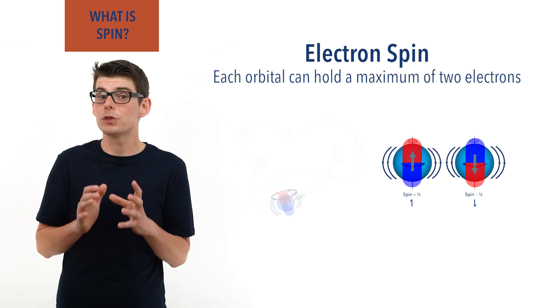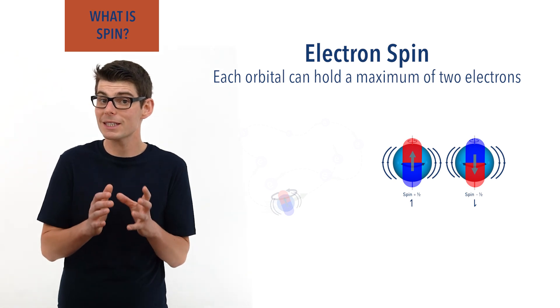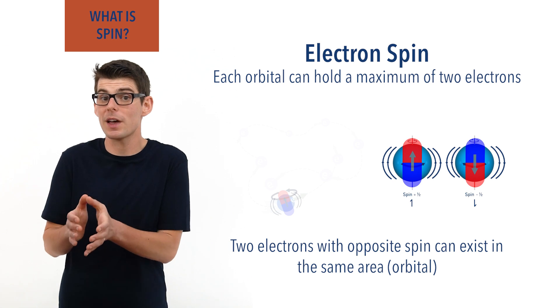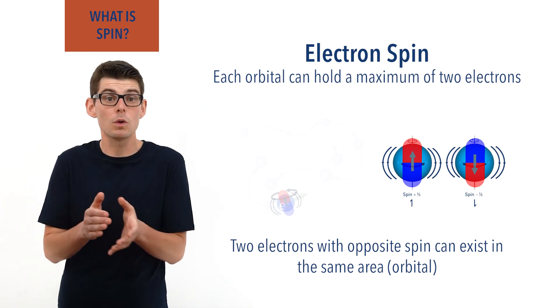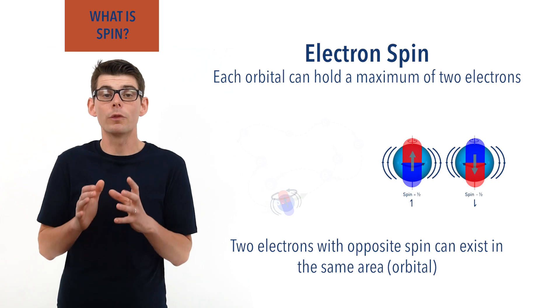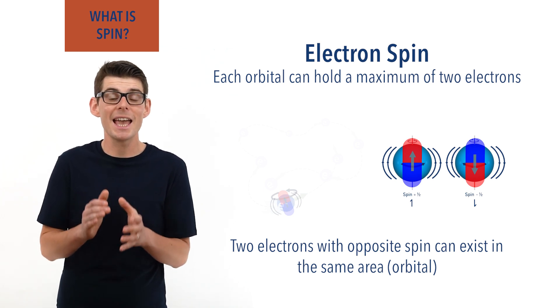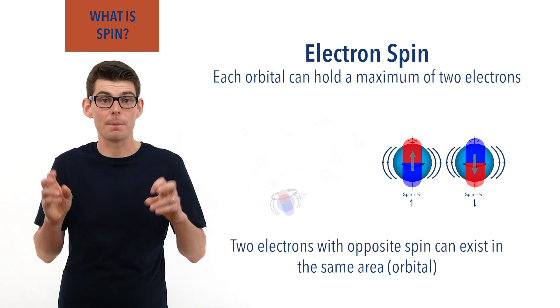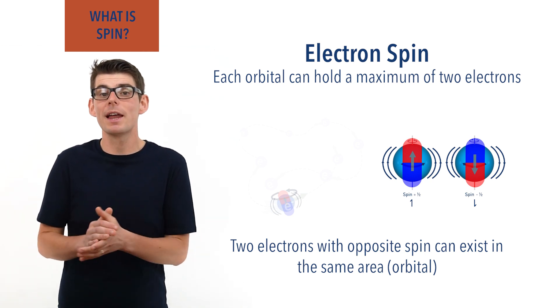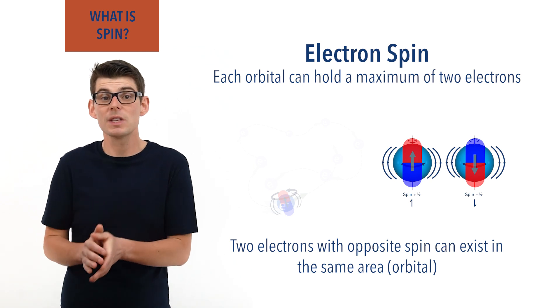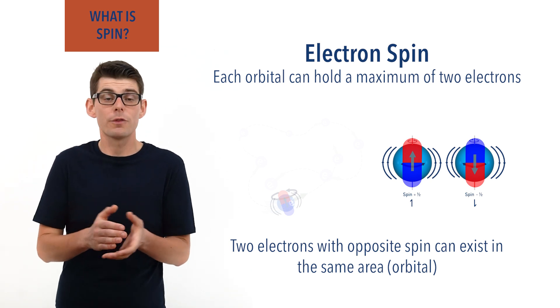And this enables two electrons with opposite spin to exist in the same area, despite the fact their two negative charges will cause repulsion. Because of this, a maximum of two electrons are able to be in any one orbital. And this means as atoms fill up with electrons, extra electrons are forced to exist in other orbitals with different shapes that are often further away from the nucleus of the atom.